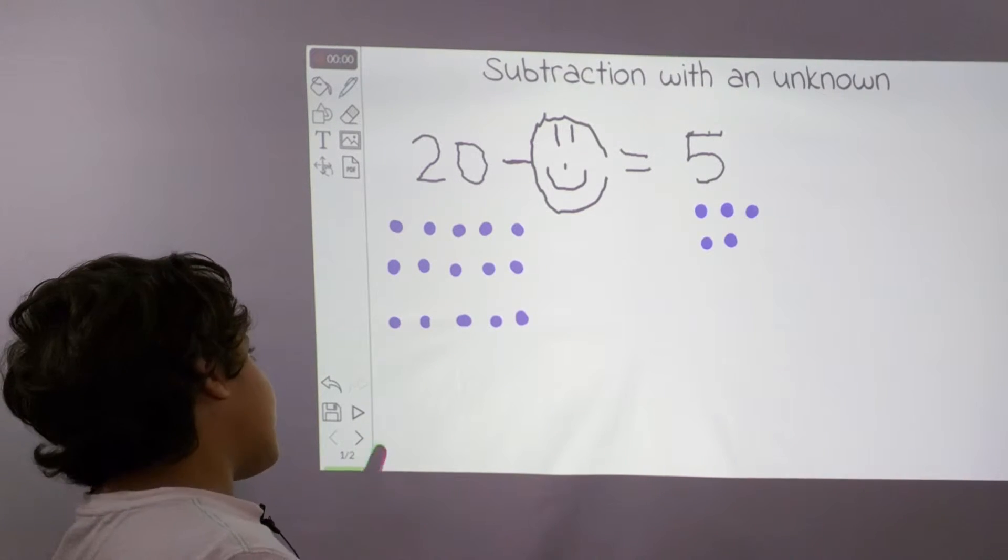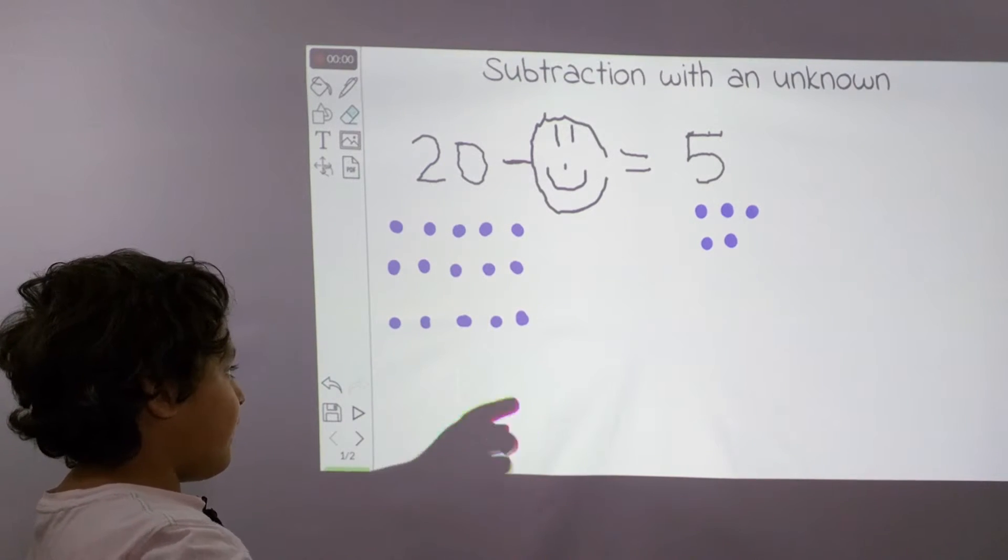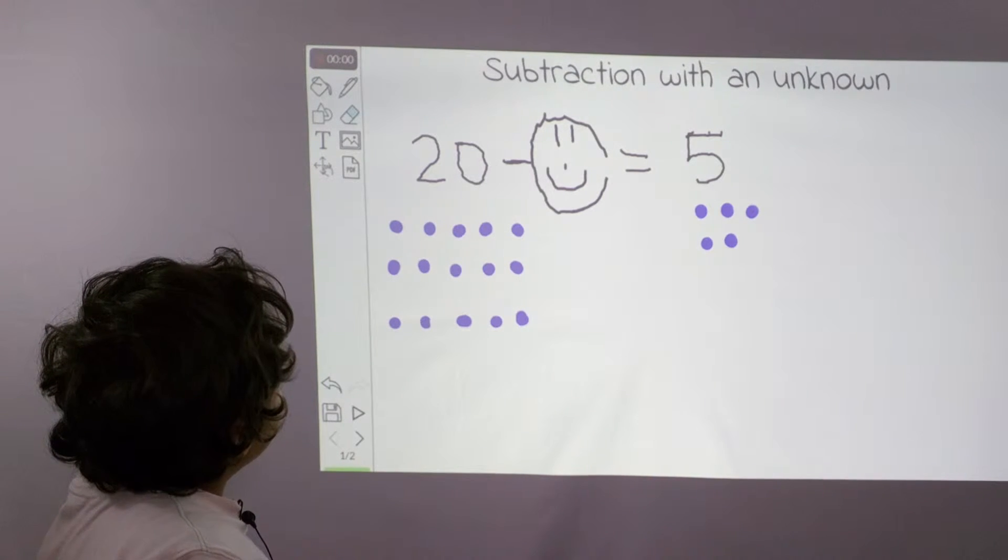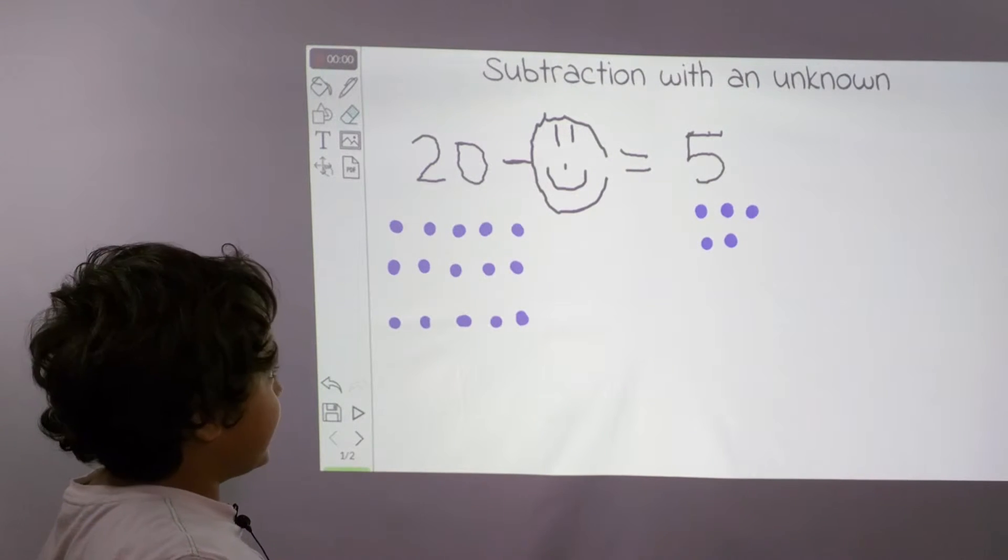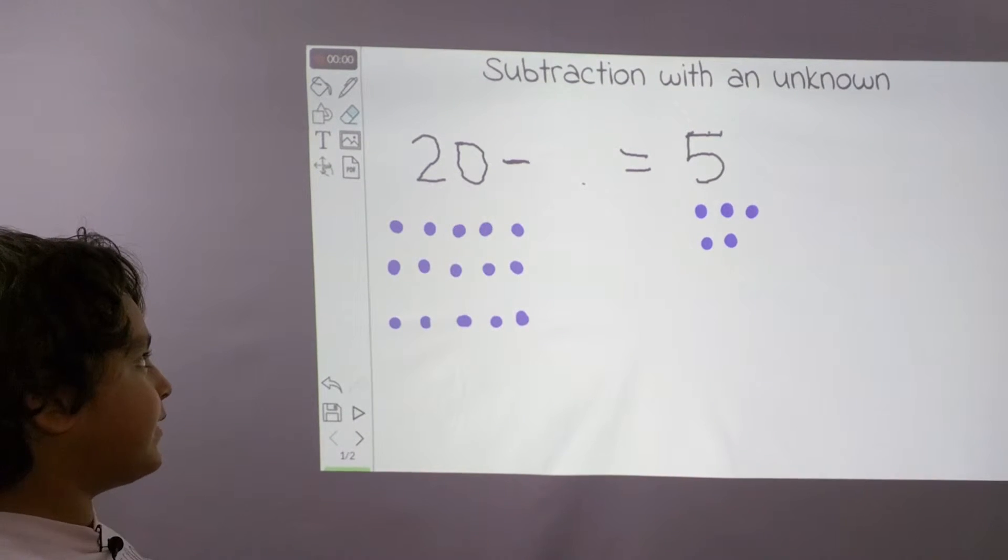And now we're going to count which rest. 1, 2, 3, 4, 5, 6, 7, 8, 9, 10, 11, 12, 13, 14, 15. So the answer is 15. So we're going to take away the happy face and put a 15.